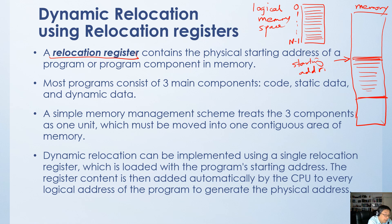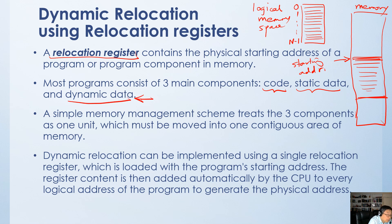Many programs consist of three main components: the code, the static data — which stores data used as input for the code — and the dynamic data, mostly used to store temporary variables during execution of the program. There are two memory management schemes for dynamic relocation. One treats all three components — code, static data, and dynamic data — as one unit.